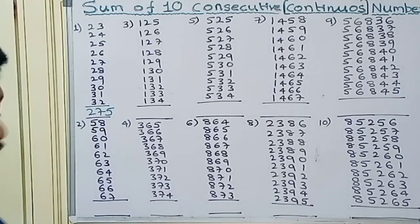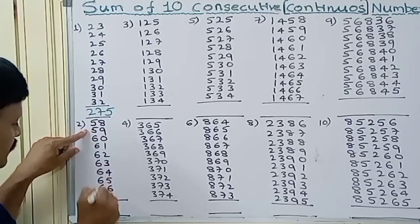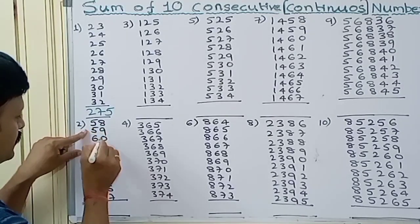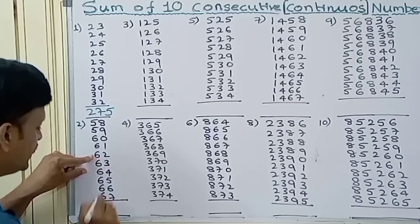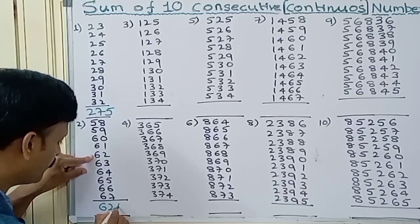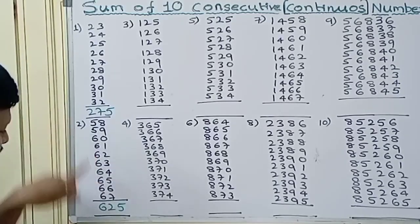Similarly 58 to 67. Count 1, 2, 3, 4, 5. Write down 62 here, put 5 here. 625.